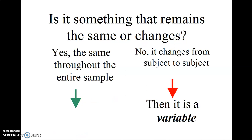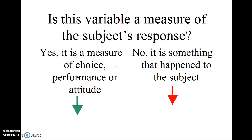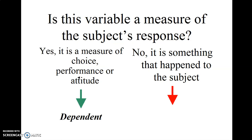But if this is something that changes from subject to subject, then it is a variable. Now we have to answer the question, what type of variable? Is this variable a measure of the subject's response? If so, it is a measure of choice, performance, or attitude. It's a dependent variable.